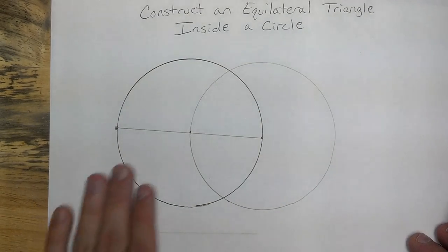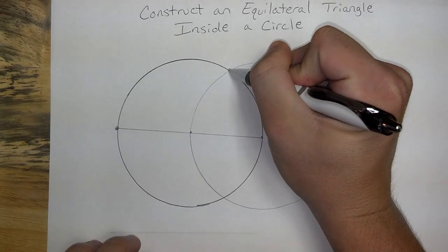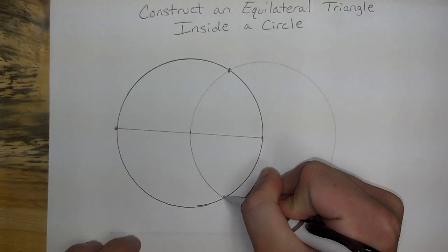Alright, now that we have two circles, we should have two more intersections, right up here, and right here.